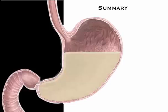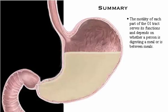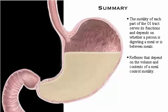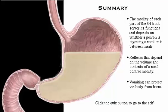Here's a summary of what we've covered. The motility of each part of the GI tract serves its functions and depends on whether a person is digesting a meal or is between meals. Reflexes that depend on the volume and contents of a meal control motility. Vomiting can protect the body from harm. To test your knowledge, click the quiz button to go to the self-quiz.